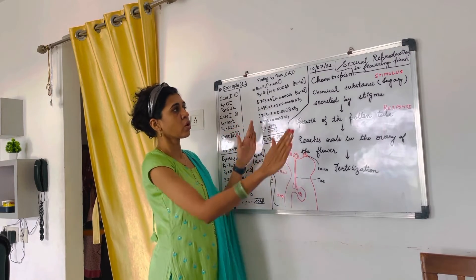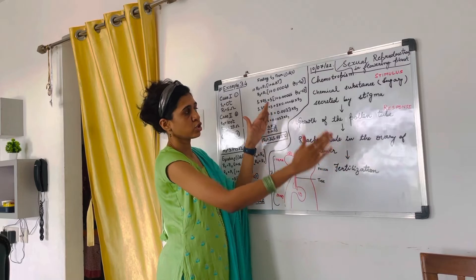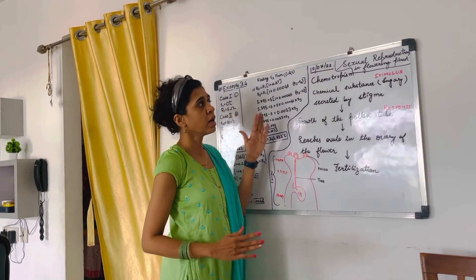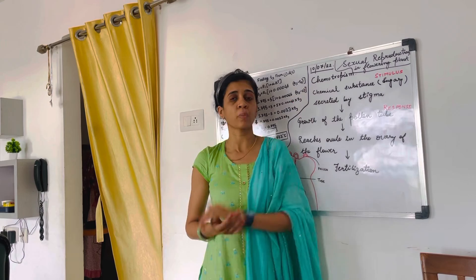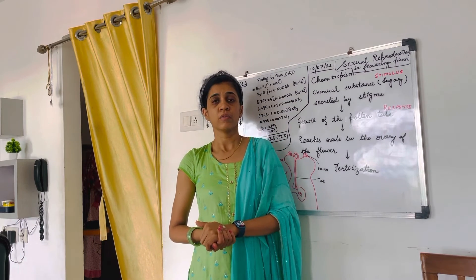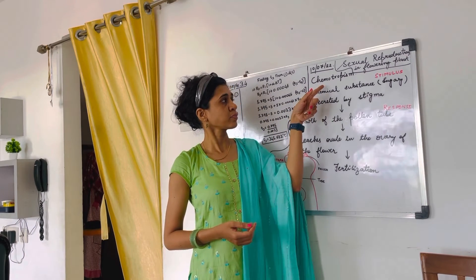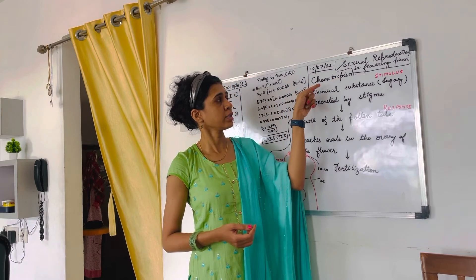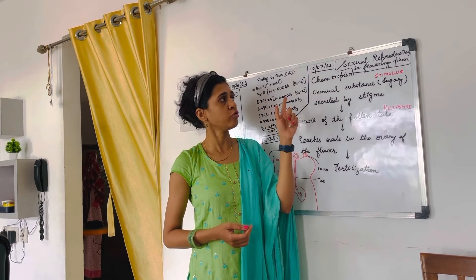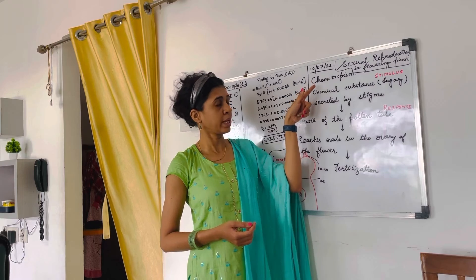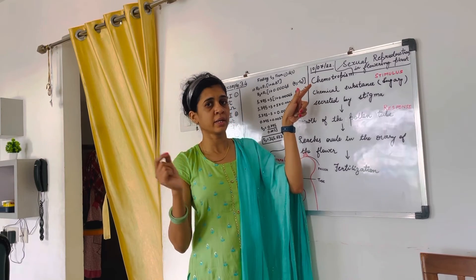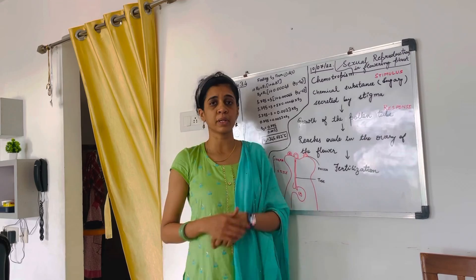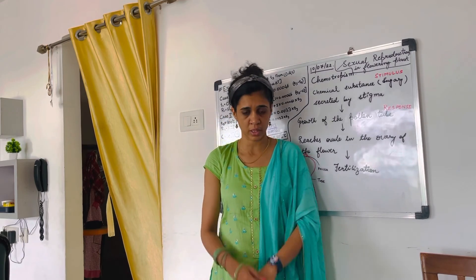This is the overall representation of sexual reproduction in flowering plants. This also falls under the topic of chemotropism, which is one type of tropism — the tropic movements of plants. Chemical-related tropic movements are called chemotropism, and the same topic is covered under chemotropism as well.